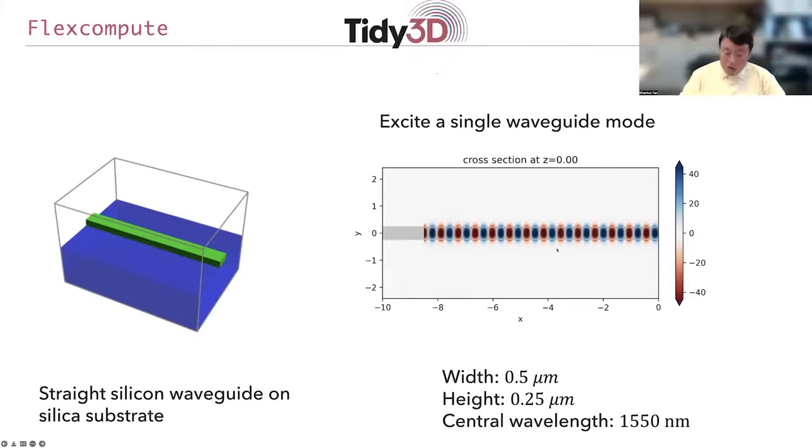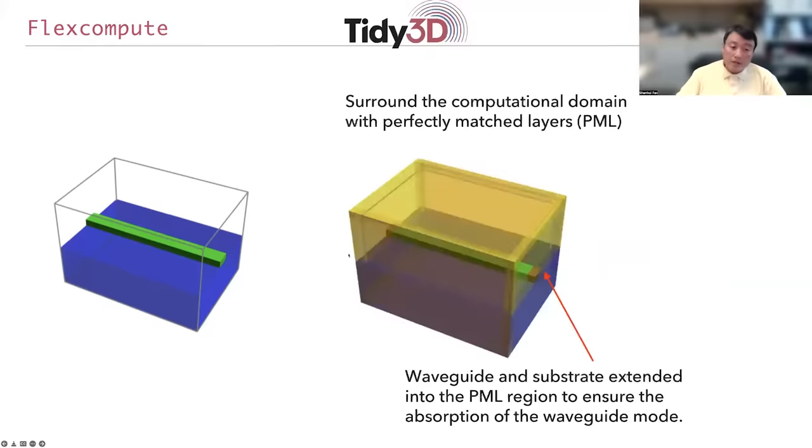Now, for this purpose, we set up the computational cell. As usual, we surround the waveguide with the perfectly matched layer boundary so that a wave propagating away from the computational domain is absorbed.